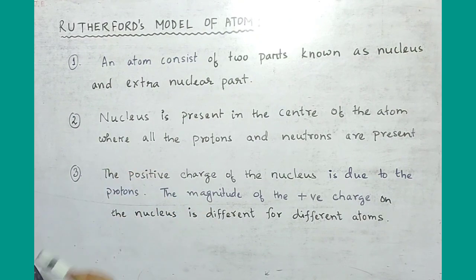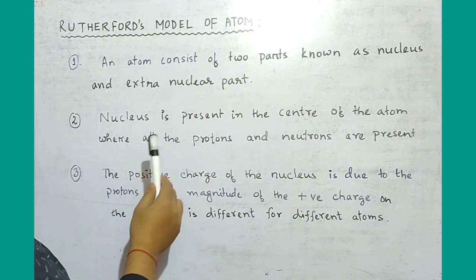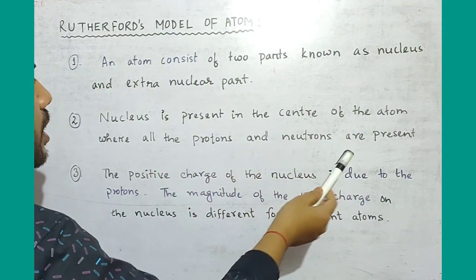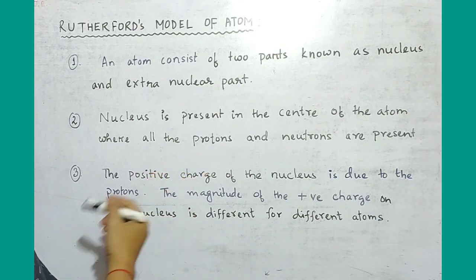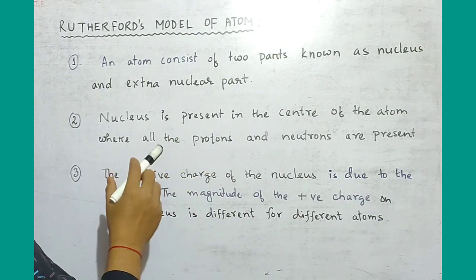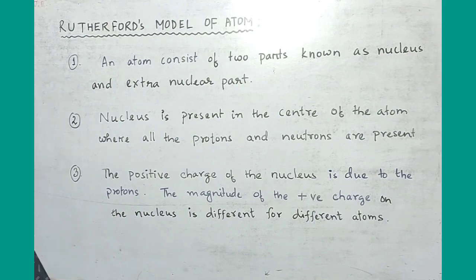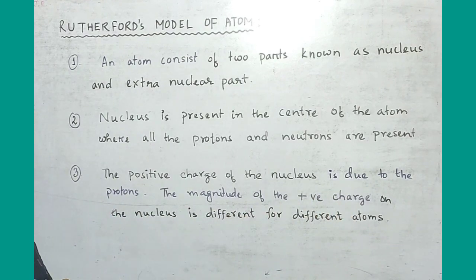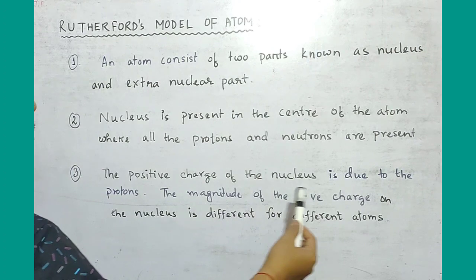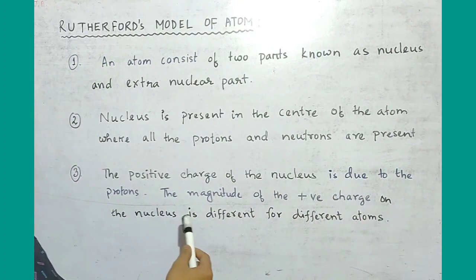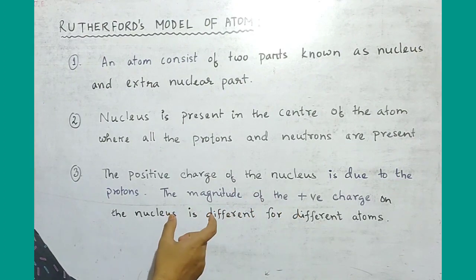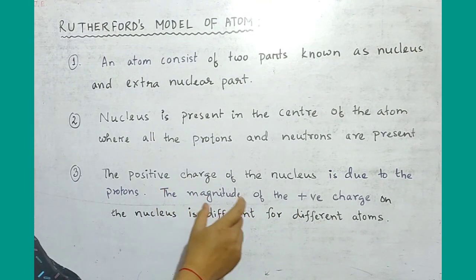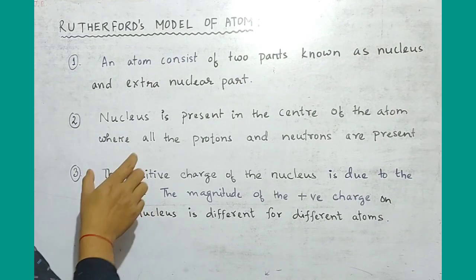Point 2: The nucleus is present at the center of the atom, where all the protons and neutrons are present. Point 3: The positive charge of the nucleus is due to the protons. The magnitude of the positive charge is different for different atoms.